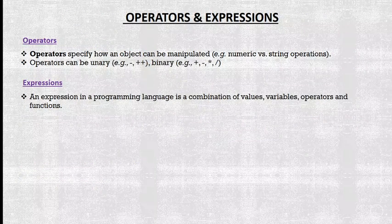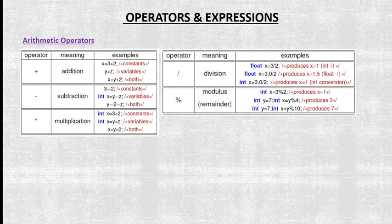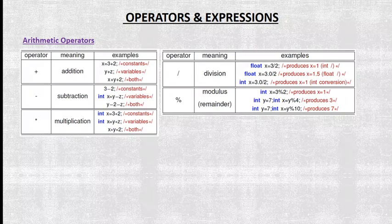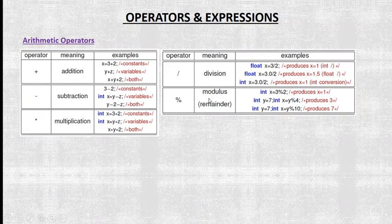Now we look at operators and expressions in embedded C programming. First, we have arithmetic operators: addition, subtraction, multiplication, division, and modulus. Modulus means we take the remainder of the division.